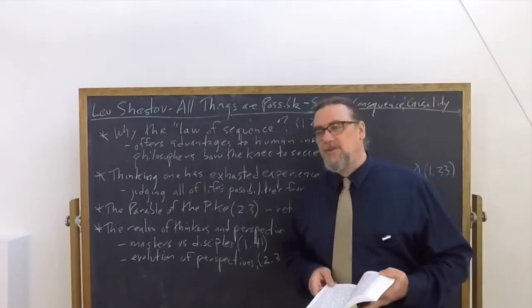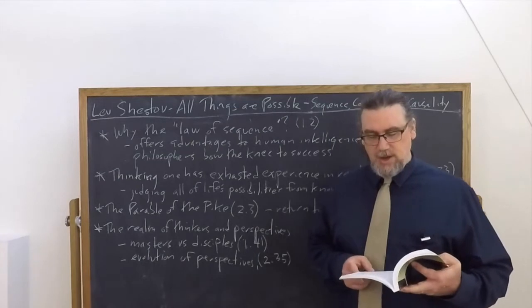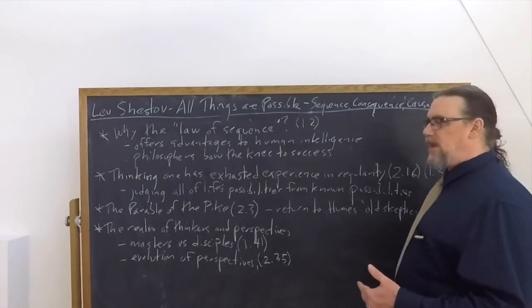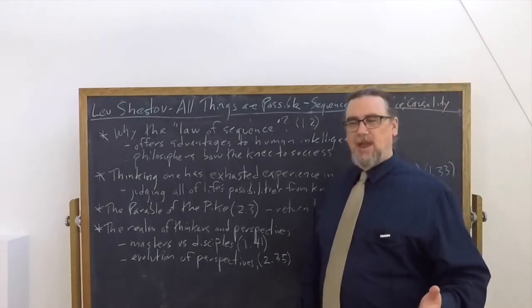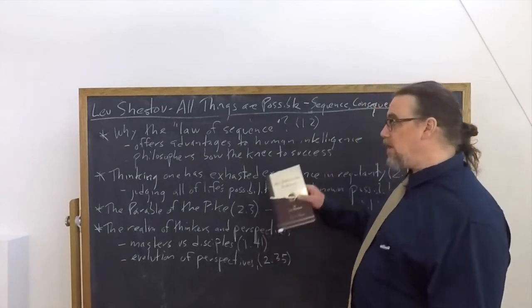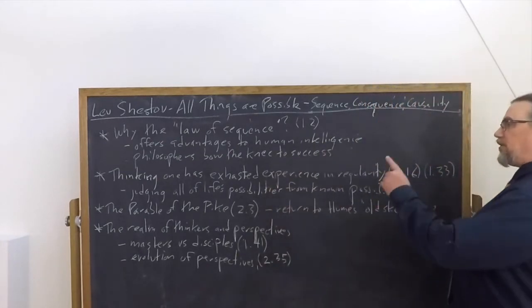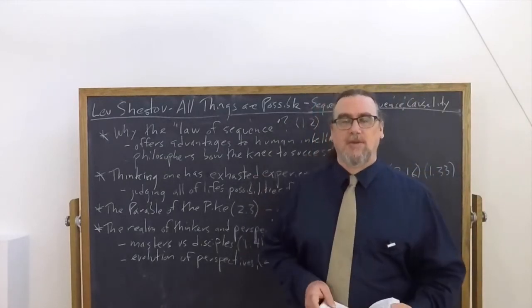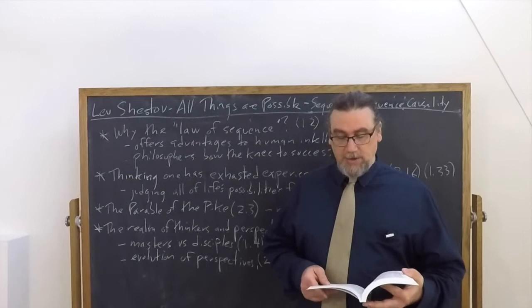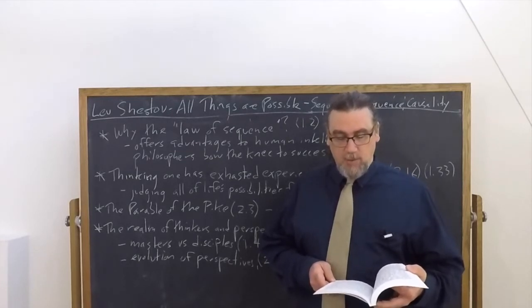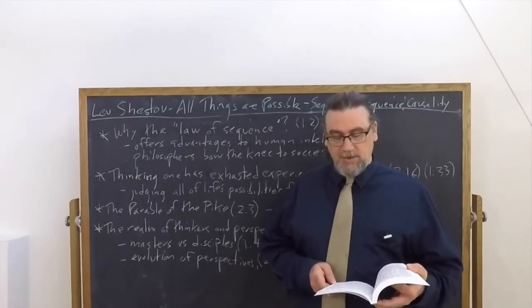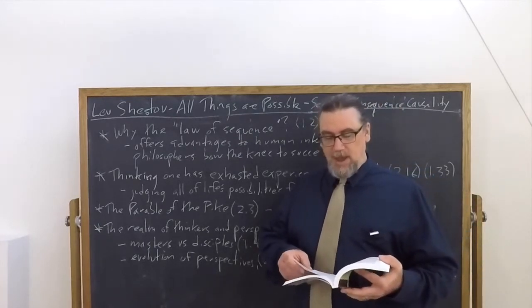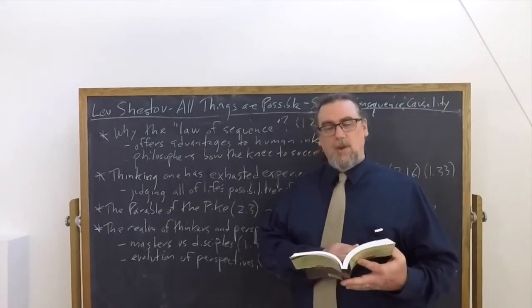And Shestov calls this a spiritual stagnation and he says you shouldn't take this spiritual stagnation as a ratification that you've actually got it right and that you can judge all of life's possibilities from the known possibilities. Because your range of what you've actually seen is actually going to be quite small. And he says, on the contrary, however rich and multifarious the past may have been, it's not exhausted a little bit.